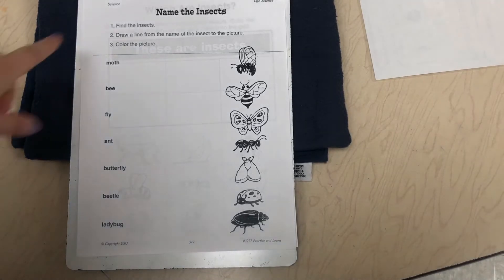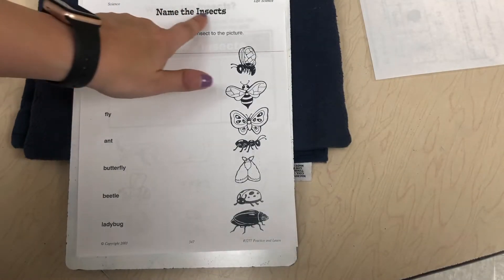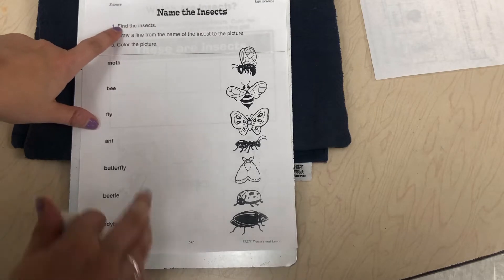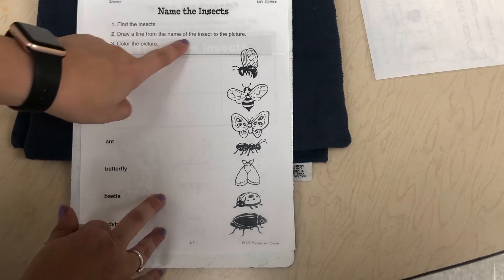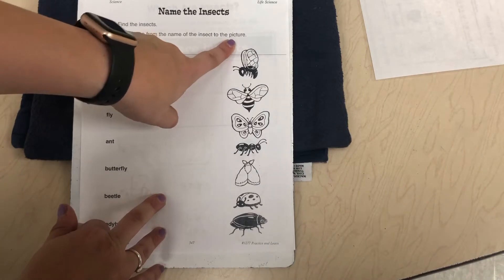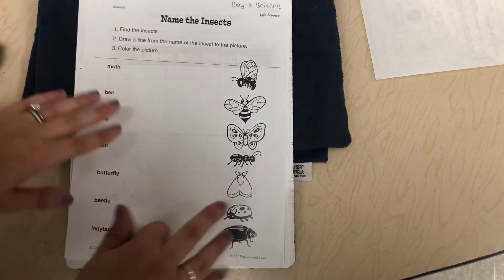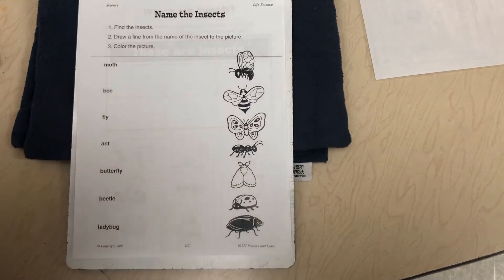Okay, so here are our instructions. It says here's our title: Name the Insects. This says find the insects, draw a line from the name of the insect to the picture, and color the picture. So optional coloring there at the end too.